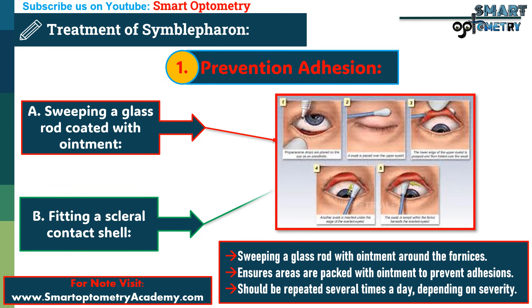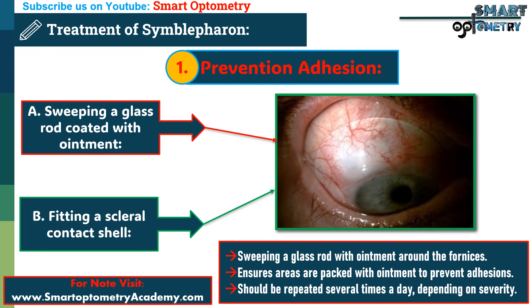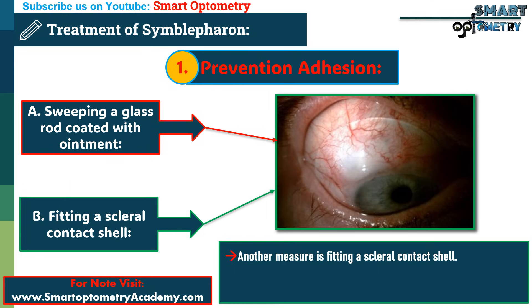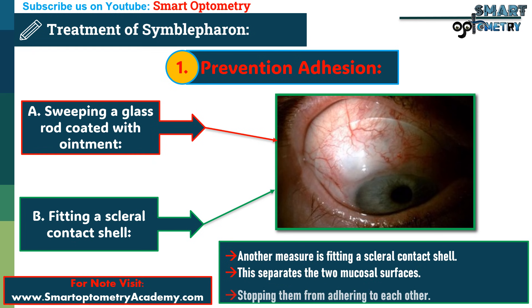b. Fitting a scleral contact shell. Another preventive measure is fitting a scleral contact shell. This separates the two mucosal surfaces, stopping them from adhering to each other.